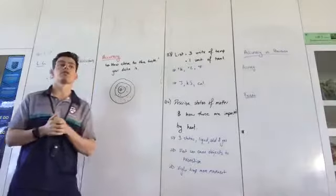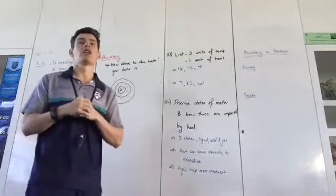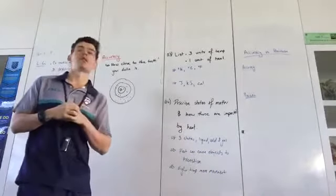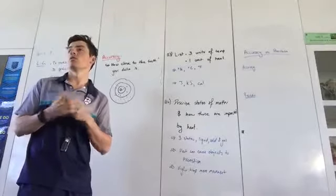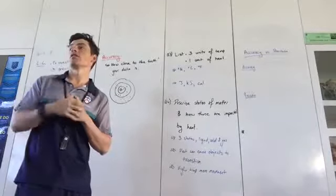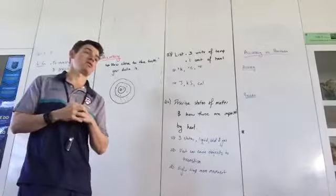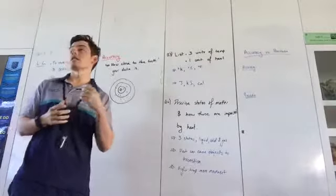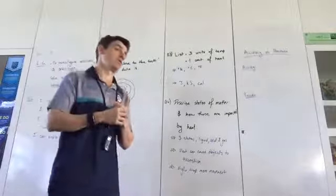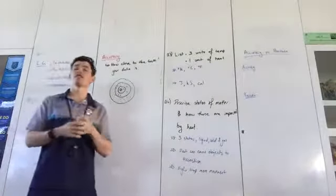But we used the super-accurate, super-precise data logger. How did we get the wrong answer? What might have caused that? Air resistance. That's an example of a highly precise, highly inaccurate experiment. How could you fix that up?